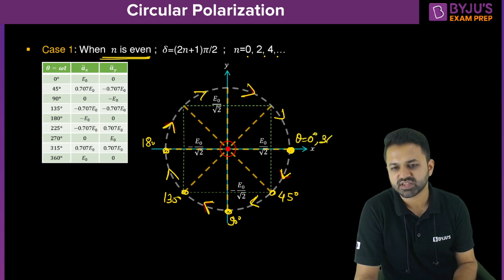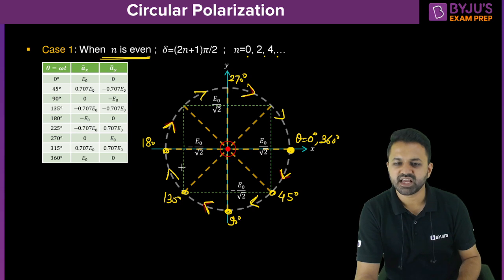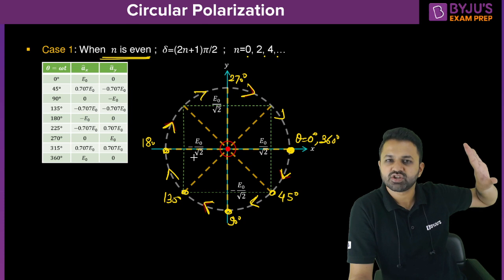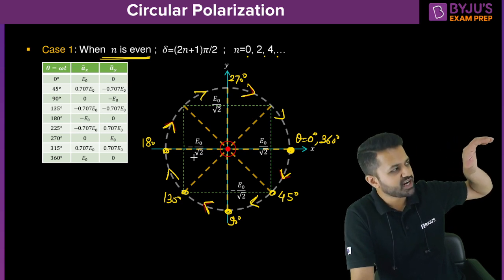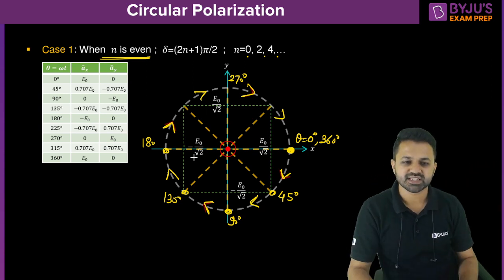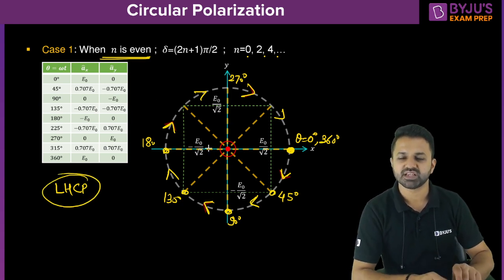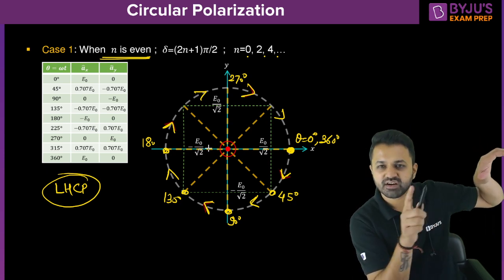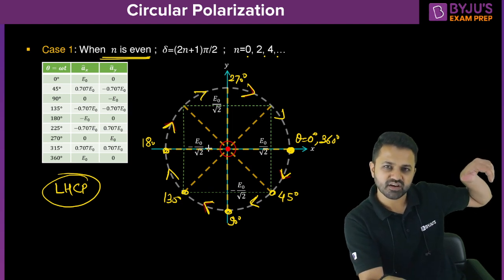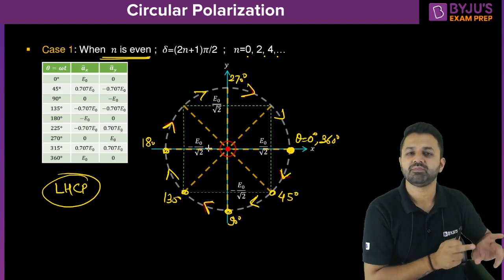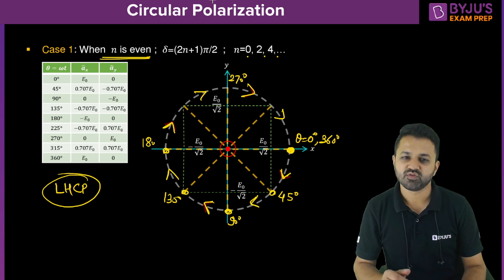The rotation is in the clockwise direction. If you use your left hand with the thumb pointing in the direction of propagation — which we assumed is the positive z direction — and curl the fingers in the clockwise direction, it is satisfied by the left hand. So because it is satisfied by the left hand, this is called Left Hand Circular Polarization (LHCP). The thumb points in the direction of propagation and the curl of the fingers matches the rotation of the tip of the electric field.